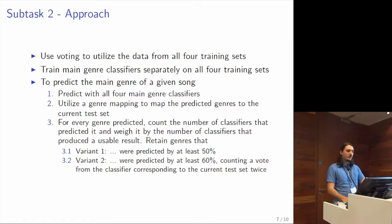For the second subtask, we decided to utilize voting to combine the four datasets together. We trained main genre classifiers separately on the four datasets provided. To predict main genre for a given song, we predicted it with all four classifiers, then utilized the mapping from genre hierarchies from all four datasets to the one we are currently looking at for the test set. We did that with a very simple approach: we calculated the Levenshtein string distance measure and mapped together all genres that had a distance of at most one.